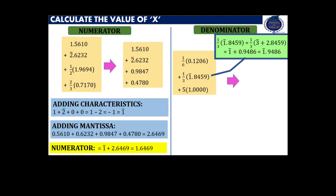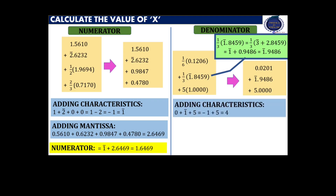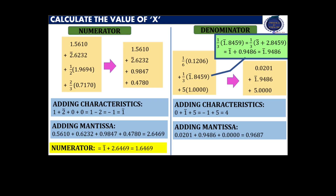The denominator has three terms written as shown in the box. Now we are going to add the characteristic and mantissa of the denominator separately. The characteristic will be equal to 4. The mantissa will be equal to 0.9687. Combining them, we get 4.9687.